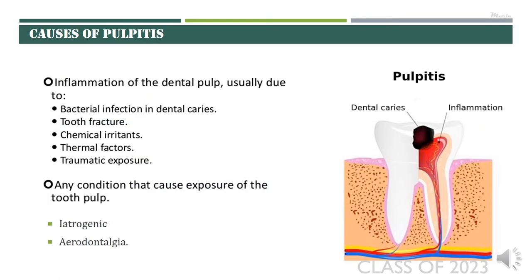Although pulpitis is mostly a result of dental caries, it is not the only cause — pulpitis can be caused by various other factors resulting in inflammation of the pulp. The most important cause is bacterial infection, i.e., dental caries, resulting in inflammatory changes within the pulp. Inflammation of the pulp can also result from trauma — a tooth fracture will expose the pulp tissue to the oral cavity, and saliva and other tissues will cause inflammatory changes. Pulpitis can also occur because of chemical irritants used during cavity preparation, which can result in transient or irreversible changes within the pulpal tissue.